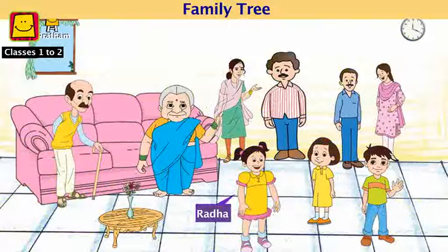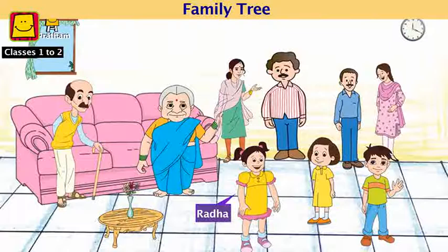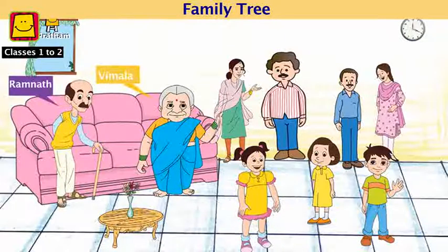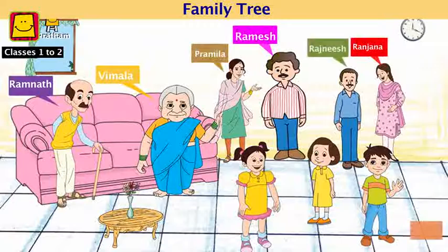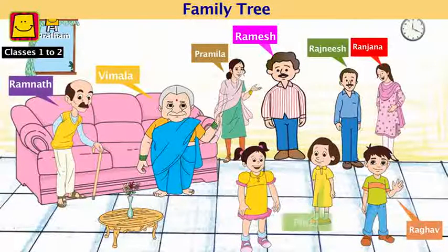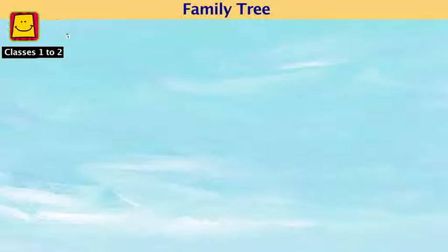This is Radha, who will tell us the names of her family members. This is Ramnath and this is Vimla. He is Ramesh and she is Pramila. Standing here is Ranjana and this is Rajneesh. And these children are Raghav and Pinky, and you already know her — she is Radha. Come, let's see them in the family tree and understand.